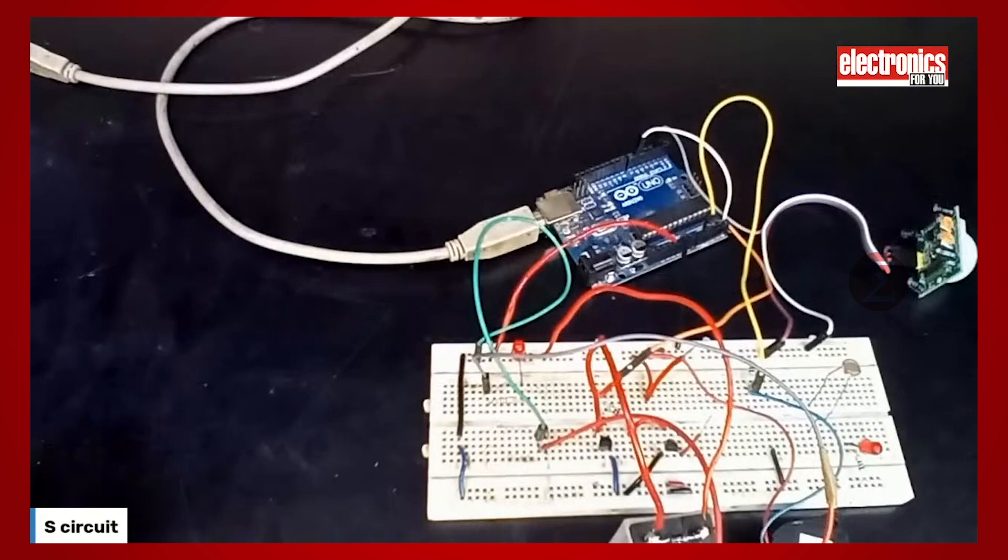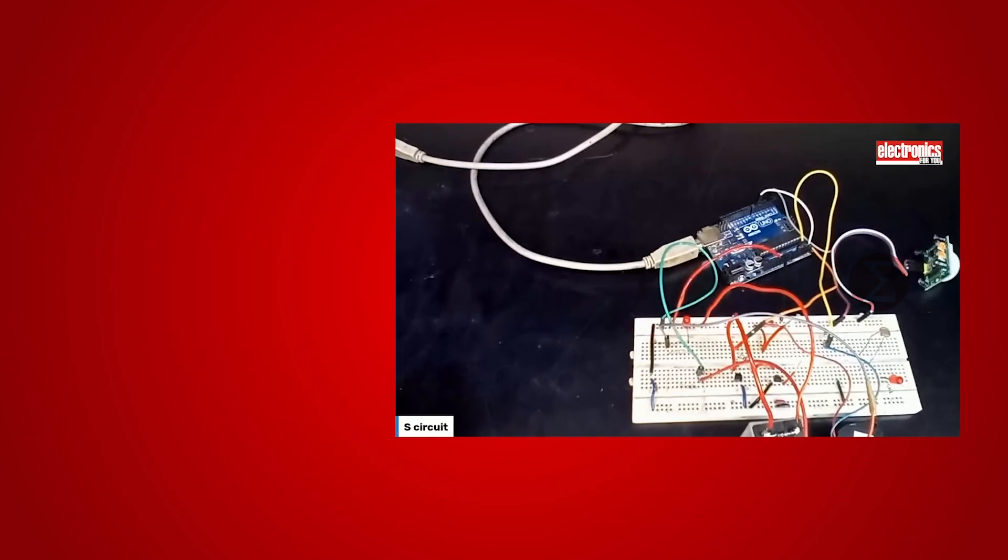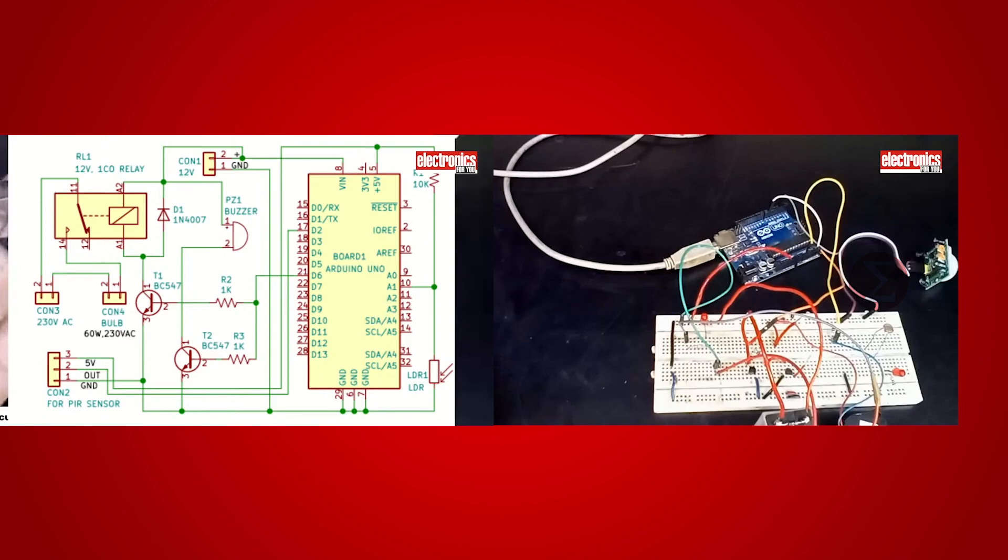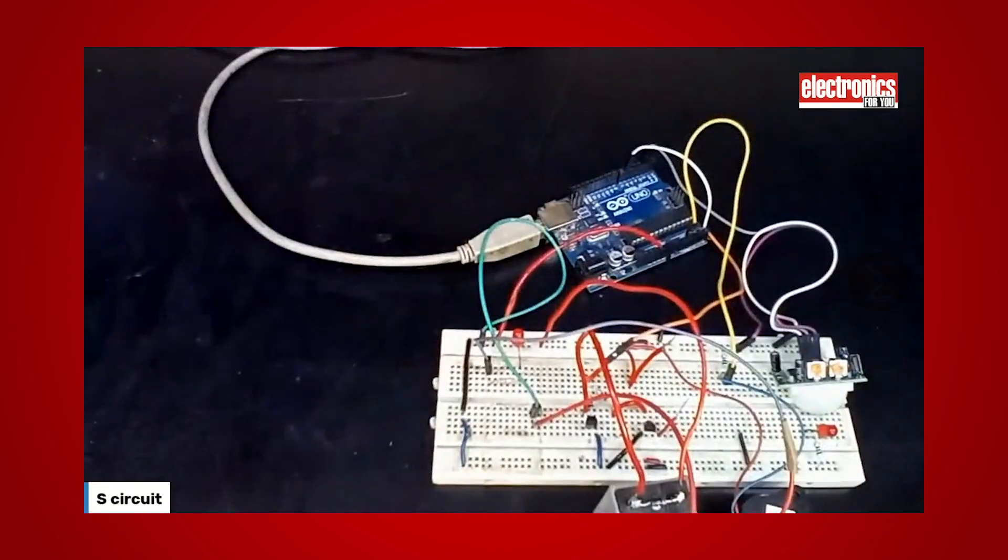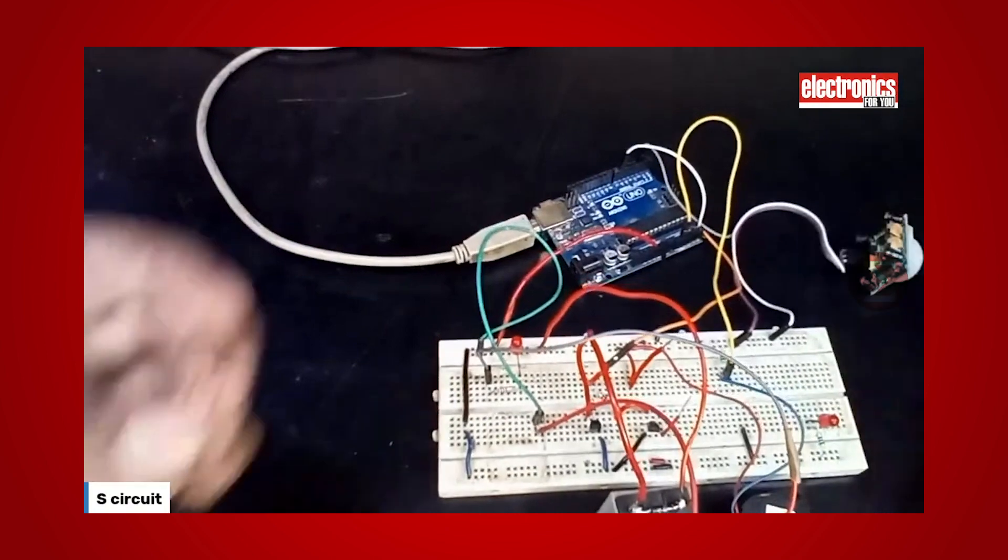You can see the circuit completely made on a breadboard. You can also connect this circuit with the help of a circuit diagram. You can even set the range of your PIR sensor using the potentiometers provided on the sensor.